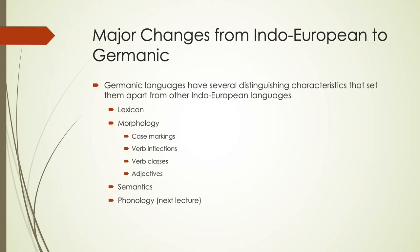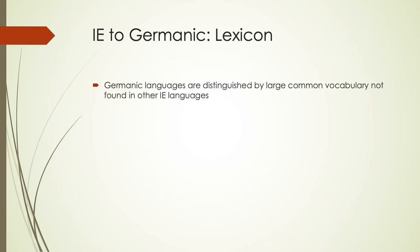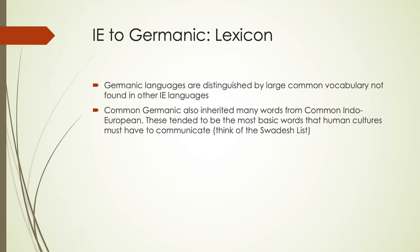Germanic languages are often distinguished because they have a large common vocabulary amongst themselves that isn't found in other Indo-European languages. This is evidence that Germanic split off, developed its own lexicon, and had time to develop that as common Germanic before the individual Germanic languages split from each other. They also inherited a lot of words from Proto-Indo-European — these tended to be the most basic words, similar to a Swadesh list: kinship terms like father and mother, basic verbs like be or eat, natural phenomena like sun and tree.